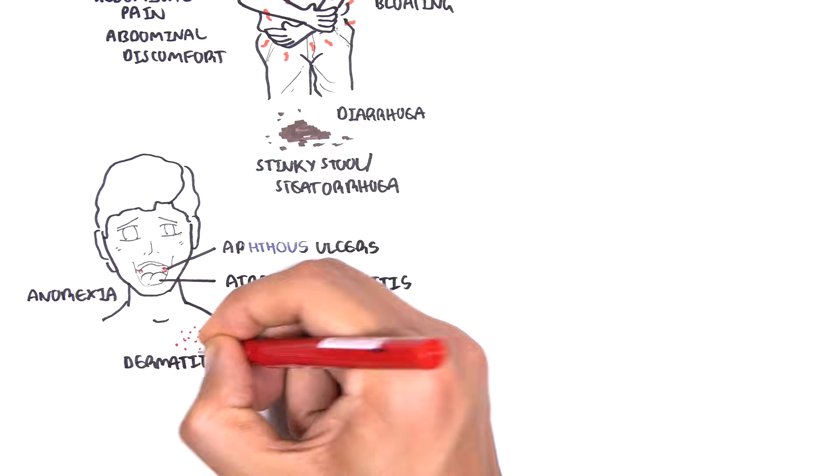Dermatitis herpetiformis is also another sign, and this is also known as Duhring's disease, and it's a chronic blistering skin condition that is itchy and usually on extensive surfaces, such as your elbow, ankles, below the knees.